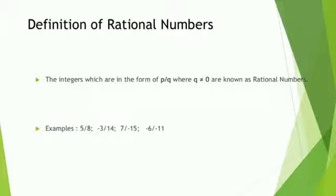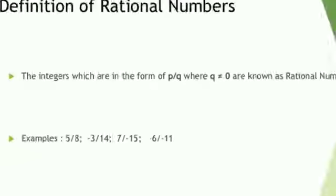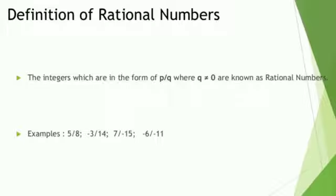First of all, we give the definition of Rational Numbers. The integers which are in the form of P upon Q, where Q not equal to 0, are known as Rational Numbers.